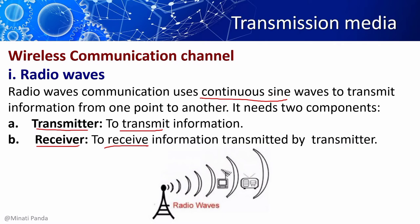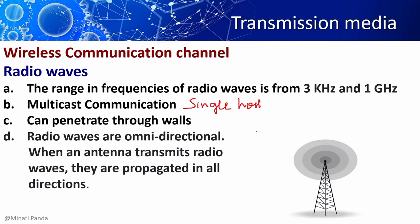Radio waves are electromagnetic waves that are transmitted in all directions of free space. In the case of radio waves, the sending and receiving antennas are not aligned. The waves sent by the sending antenna can be received by any receiving antenna. The frequency of radio waves is from 3 kHz to 1 GHz. Radio waves are used for multicast communications, which means transmission is addressed to a group of destination computers simultaneously — one sender and many receivers, or many senders and many receivers.